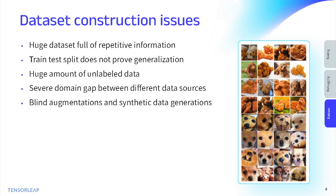Most of this is because of the dataset situation. We constantly have a lot of repetitive and redundant information because it's hard to understand which features the model uses. The huge amount of unlabeled data is a big bottleneck — the process of labeling images is expensive, and companies must understand which samples to label at each point. If you're labeling one thousand samples, you're not labeling other thousand samples you might need. And when combining datasets — from real world, different cameras, different times, or from synthetic data — bridging domain gaps between all those data sources is a very hard problem.